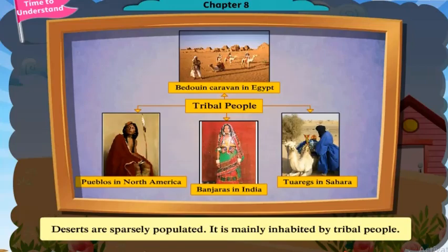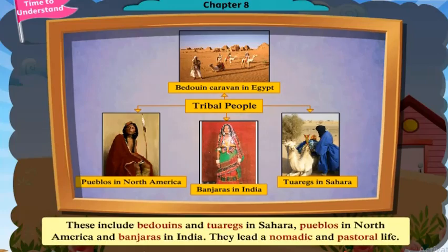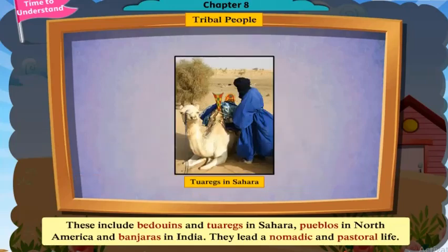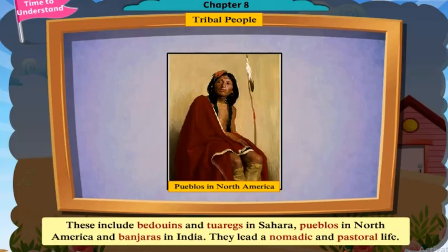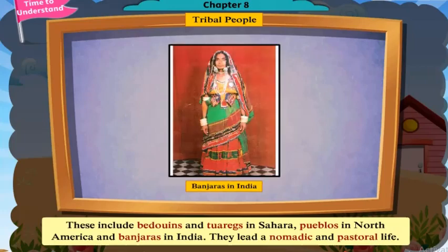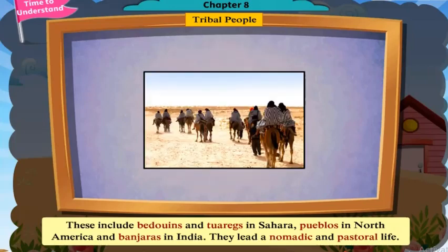Deserts are sparsely populated and mainly inhabited by tribal people. These include Bedouins and Tuaregs in the Sahara, Pueblos in North America, and Banjaras in India. They lead a nomadic and pastoral life.